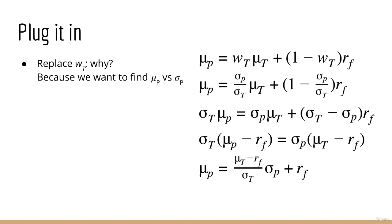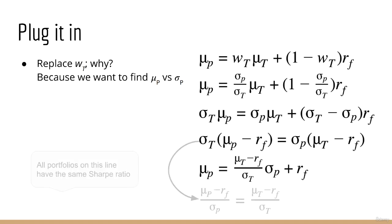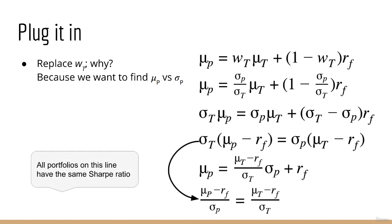This means any portfolio made up of the tangency portfolio plus the risk-free asset has this specific Sharpe ratio. We can also see this by rearranging an earlier equation: the Sharpe ratio of the mixed portfolio on the left equals the Sharpe ratio of the tangency portfolio on the right. This equality always holds, so the Sharpe ratio of the mixed portfolio is always equal to the Sharpe ratio of the tangency portfolio.